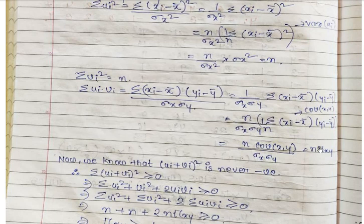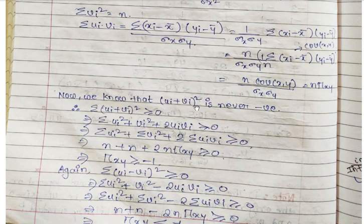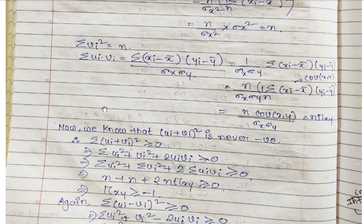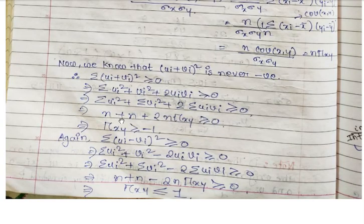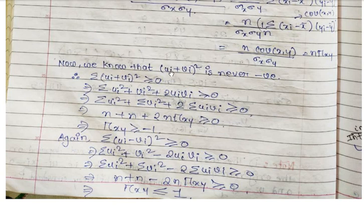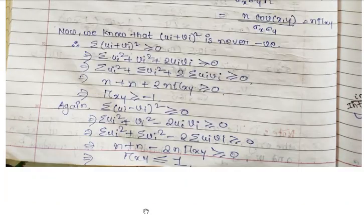Since Σ(ui + vi)² ≥ 0, expanding gives Σui² + 2Σui·vi + Σvi² ≥ 0, i.e., n + 2n·r(X,Y) + n ≥ 0, which gives r(X,Y) ≥ −1. Similarly, since Σ(ui − vi)² ≥ 0, we obtain r(X,Y) ≤ 1. Combining both inequalities, we derive that r(X,Y) lies between −1 and +1.